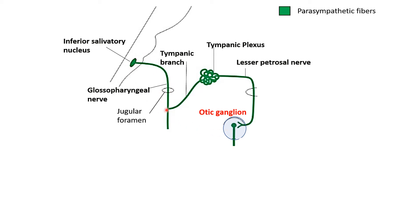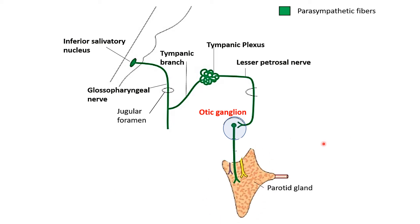To summarize the preganglionic course: from the inferior salivatory nucleus, fibers enter the glossopharyngeal nerve, exit through the jugular foramen, travel via the tympanic branch to the tympanic plexus, then continue as the lesser petrosal nerve through the foramen ovale to synapse in the otic ganglion. The postganglionic fibers then travel via the auriculotemporal nerve to reach the parotid gland.